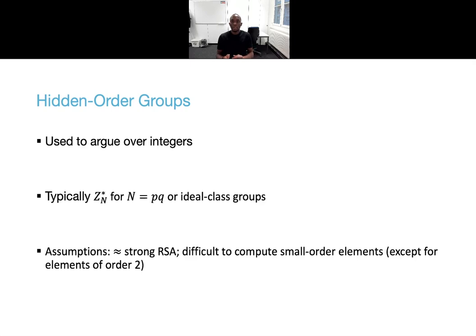To argue over the integers instead of residue classes modulo a prime, the solution is often to use hidden order groups. These are, for instance, Z_N* for an RSA modulus N, and ideal class groups. Some assumptions over these groups were formulated by Damgaard and Fujisaki, and are essentially a generalization of the strong RSA assumption, and the assumption that it is difficult to compute small-order elements, except for elements of order 2, since minus 1, for example, is an element of order 2 but is also easy to compute.